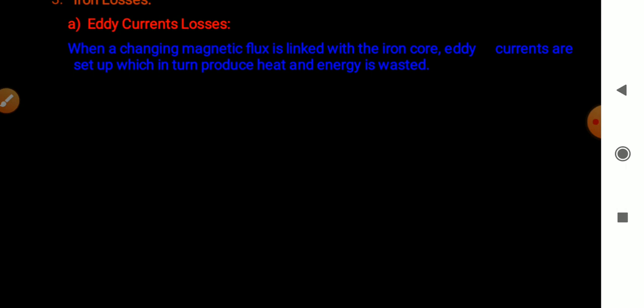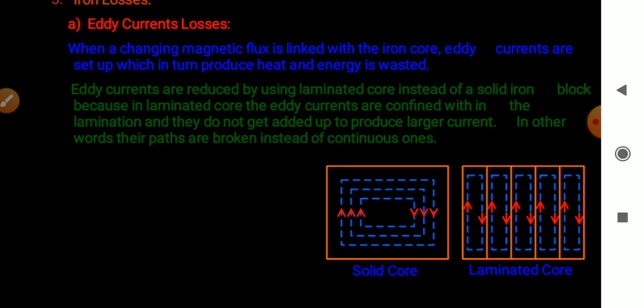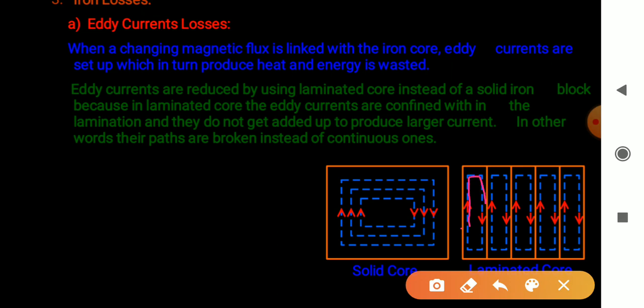Iron losses include eddy current losses. When changing magnetic flux is linked with the iron core, eddy currents are set up, which in turn produce heat and energy is wasted. Eddy currents are reduced by using a laminated core instead of a solid iron block, as shown in the figure. In a laminated core, the eddy currents are confined within each lamination and do not get added up to produce larger currents — their paths are broken instead of continuous.